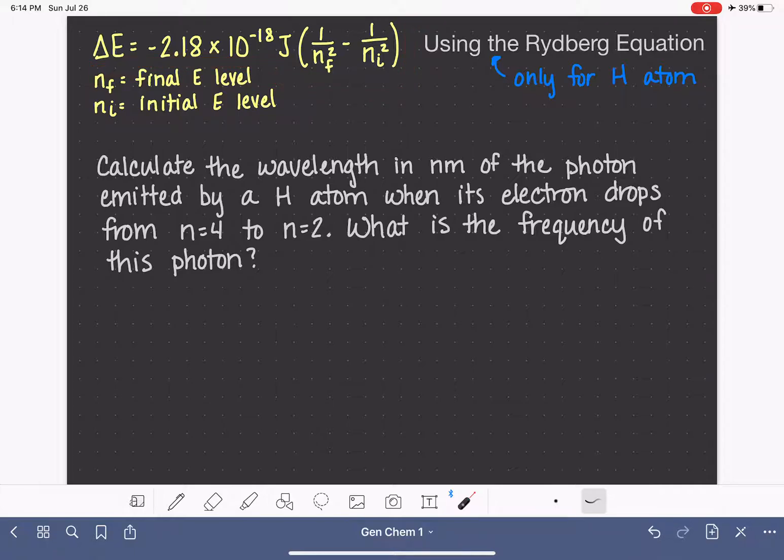The Rydberg equation calculates the change in energy. So remember that Greek letter delta, which looks like a triangle, is used to symbolize change. So this means the change in energy is equal to negative 2.18 times 10 to the negative 18, the units of joules, which are the energy units.